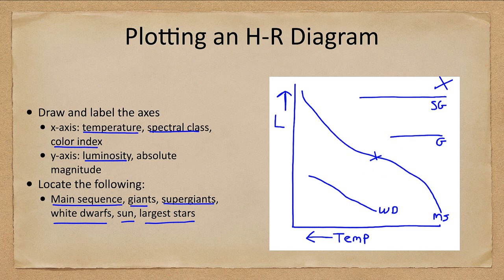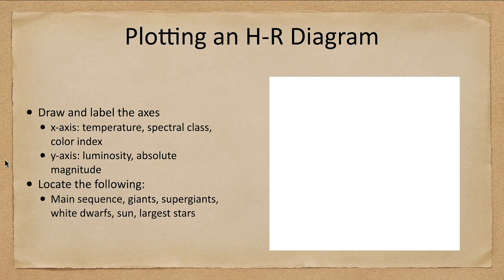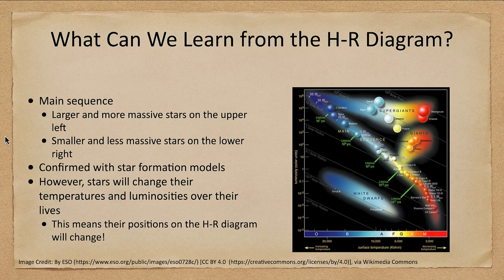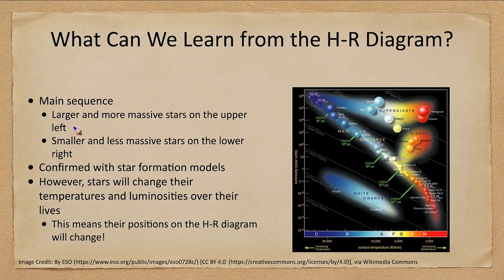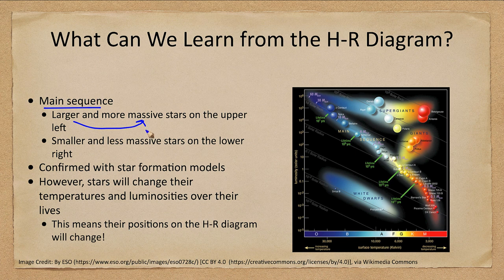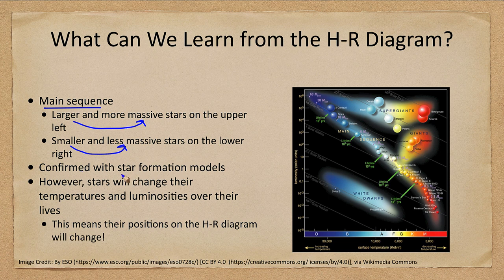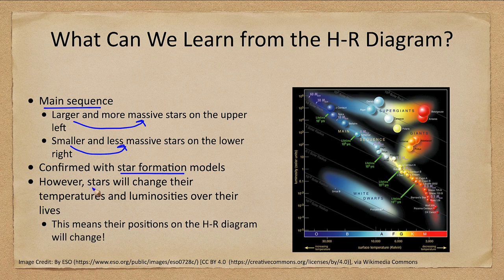What can we learn from the HR diagram? On the main sequence we find that the larger and more massive stars are on the upper left, the smaller less massive stars on the lower right. This has been confirmed with models of star formation which predict this to be the case.